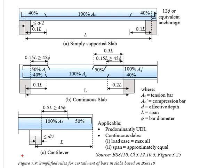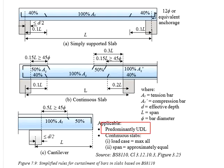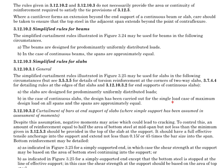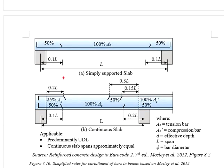Now that you know the simplified rules for the curtailments of bars in slabs, you need to know their applications. British Standard clearly specifies the applications of those simplified curtailment rules. To make it simple, the loading should be predominantly uniformly distributed. In the continuous slab, this rule applies to a single load case of maximum design loads on all spans — meaning every span is assumed to be subjected to the maximum design load — and these spans are approximately equal, meaning the effective lengths should not vary significantly.